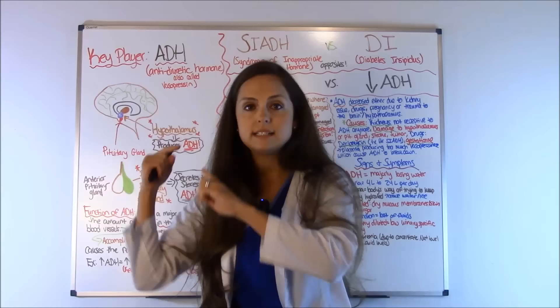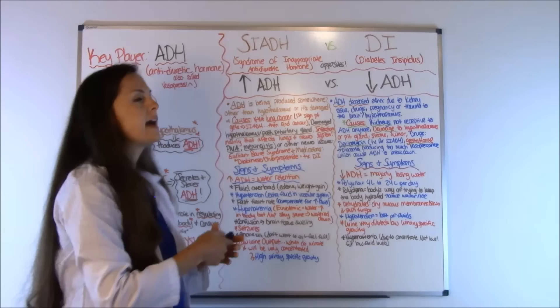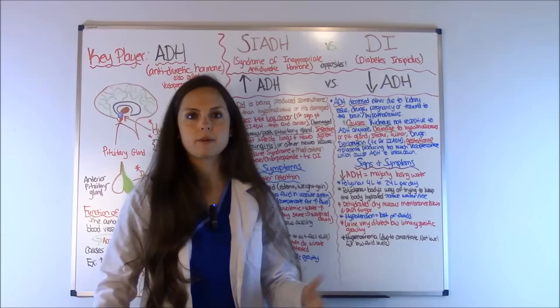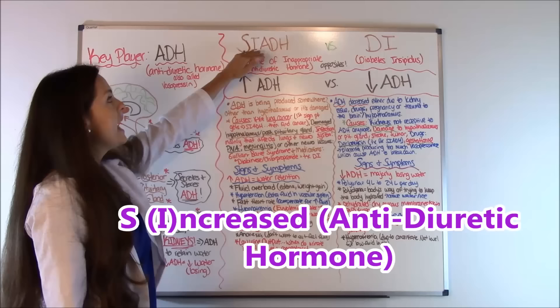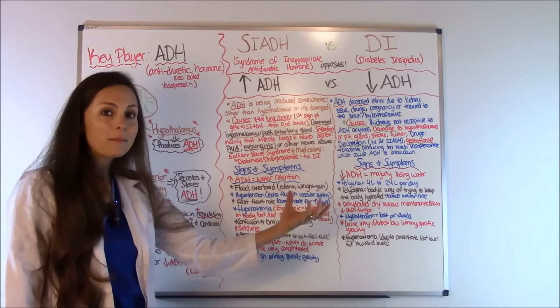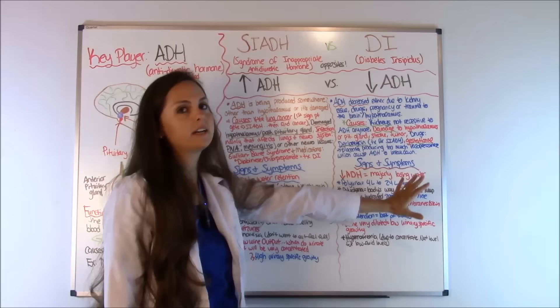Now let's look at what happens when there's too much or not enough ADH. A helpful mnemonic: in SIADH, there's an 'I' in the middle — just remember that 'I' stands for increased ADH. Then you know it's the complete opposite for diabetes insipidus, which has decreased ADH. So SIADH equals increased ADH, DI equals decreased ADH — and then everything else literally makes sense.